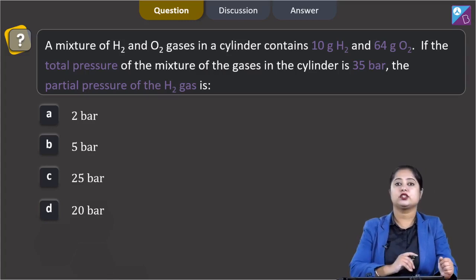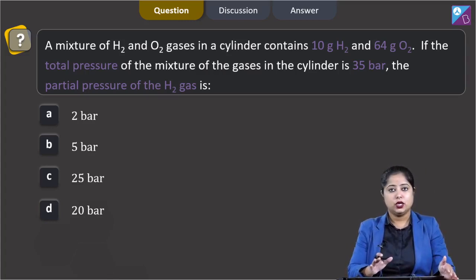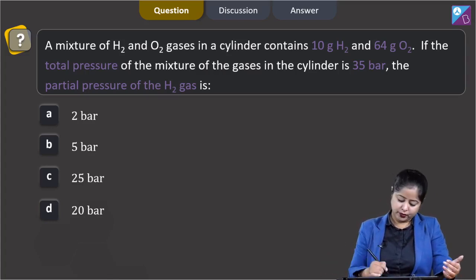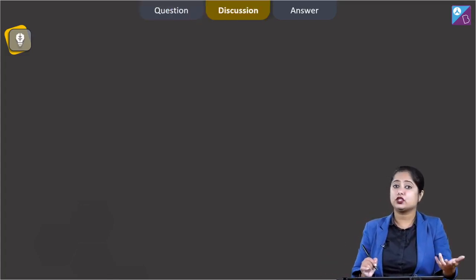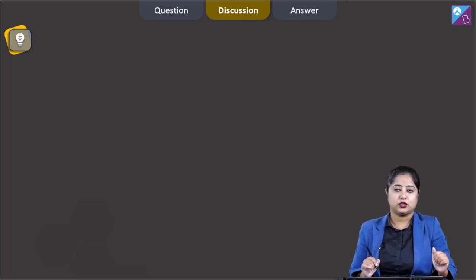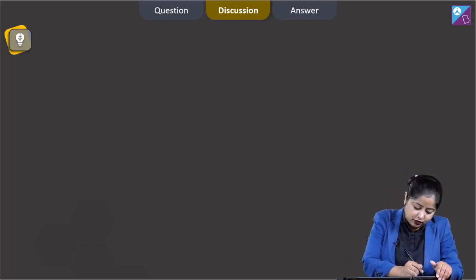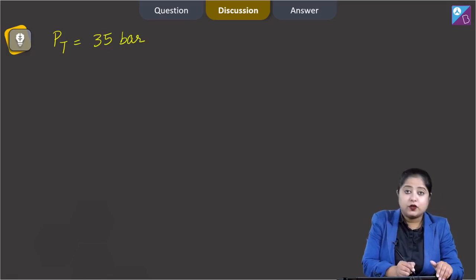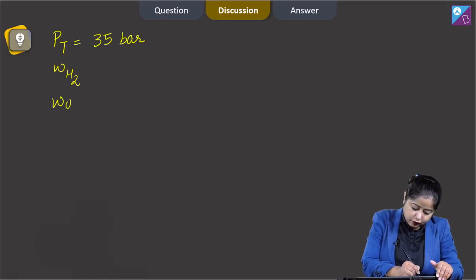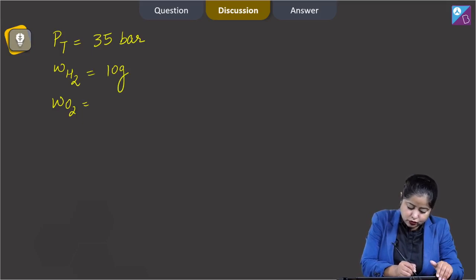In this question we have to calculate the partial pressure of H2, given a mixture of H2 and O2 with their masses and total pressure. The data given: total pressure = 35 bar, mass of H2 = 10 grams, and mass of O2 = 64 grams.